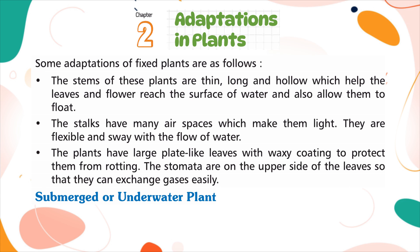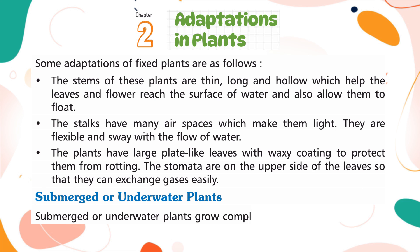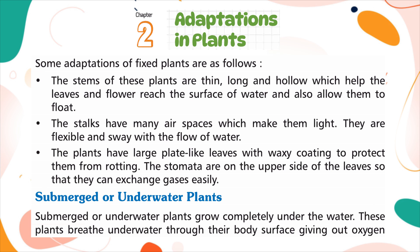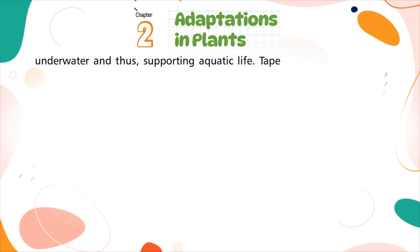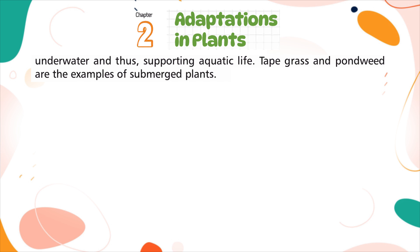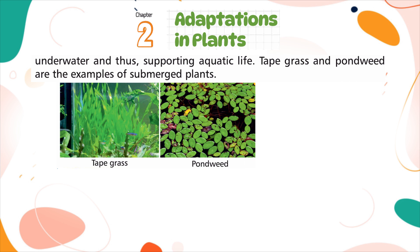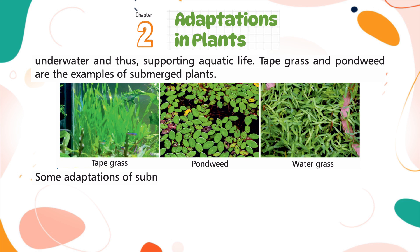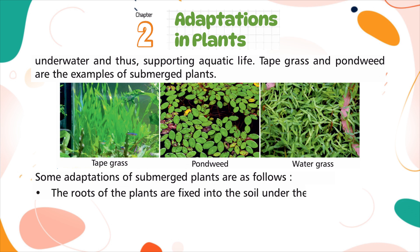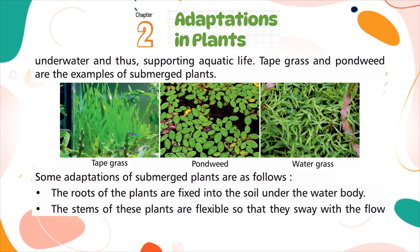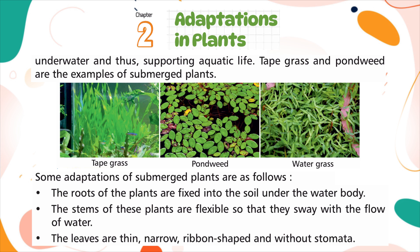Submerged or Underwater Plants. Submerged or underwater plants grow completely under the water. These plants breathe underwater through their body surface, giving out oxygen underwater and thus supporting aquatic life. Tape grass and pondweed are examples of submerged plants. The roots of the plants are fixed into the soil under the water body. The stems of these plants are flexible so that they sway with the flow of water. The leaves are thin, narrow, ribbon-shaped and without stomata.